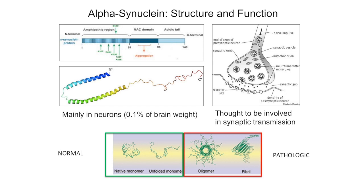In terms of its function, alpha-synuclein is thought to be involved in synaptic transmission — meaning in the communication between neurons. Specifically, it seems to have a role in regulating synaptic vesicle transport: the transport of little balloons that contain neurotransmitters, which are brought to the border of the membrane and then released into the synaptic space. That's how these two neurons communicate. It's quite abundant in neurons mainly, and it can make up to 0.1% of brain weight.